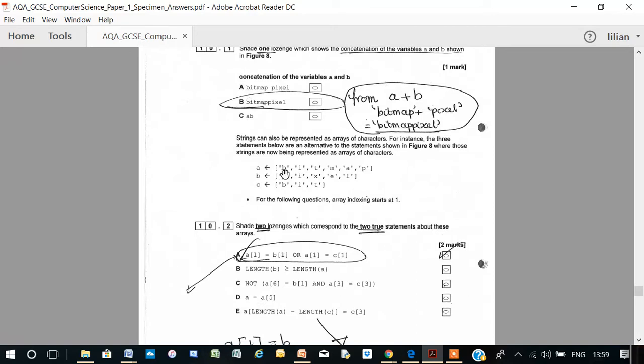Can you see that the characters are separated out? A equals B, then I, then T, then M, A, B. B equals P, I, X, E, L. And C is B, I, T.